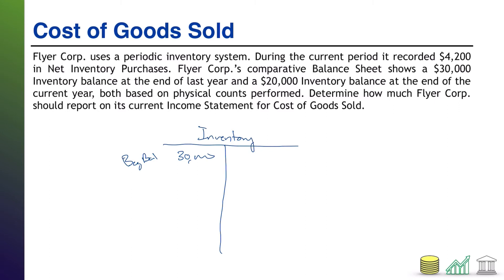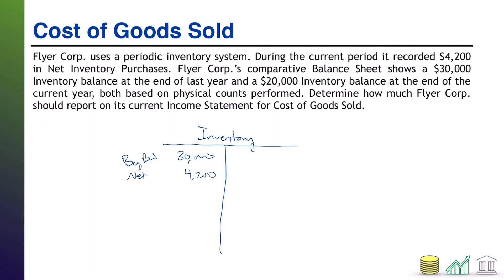We're going to care about what we bought that increased this amount — that's the beginning balance — but that's not necessarily what we had available for sale. We're going to add our net purchases to this. We had $4,200 in net inventory purchases, so that makes inventory go up. The combination of the beginning balance and net purchases is what's known as cost of goods available for sale — the total amount of product that we could have sold to customers.